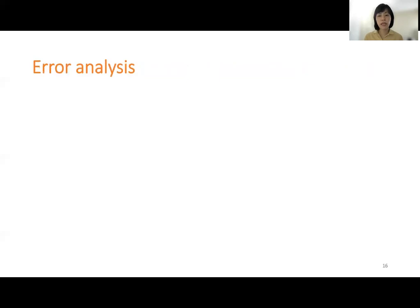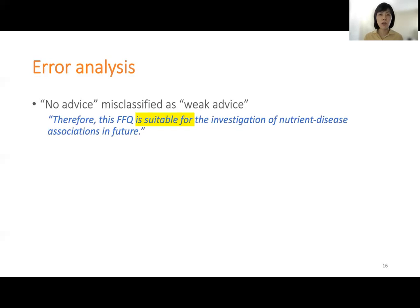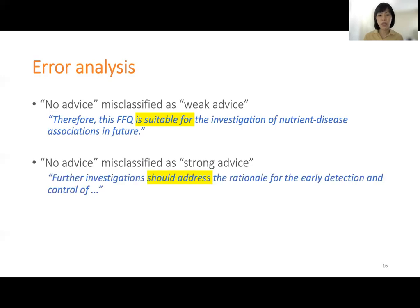For the misclassified cases, we found that a no-advice sentence would be misclassified as weak advice because it has language cues like 'it is suitable for.' Similarly, a no-advice sentence could also be classified as strong advice because it has cues like 'should' or 'must,' which are indicators for strong advice.